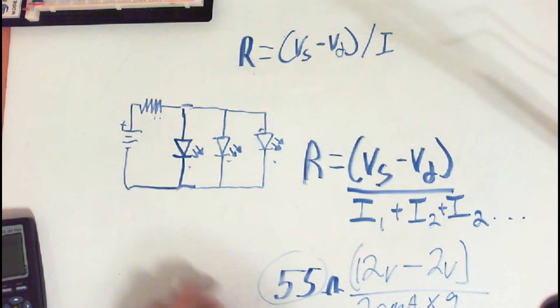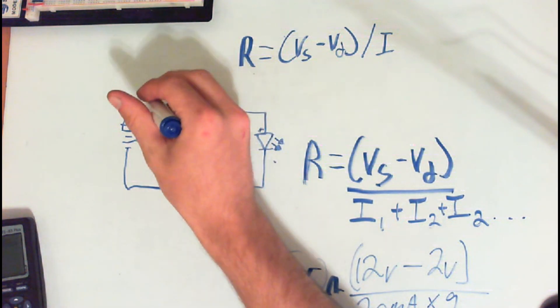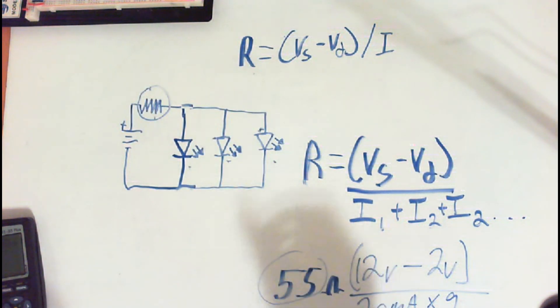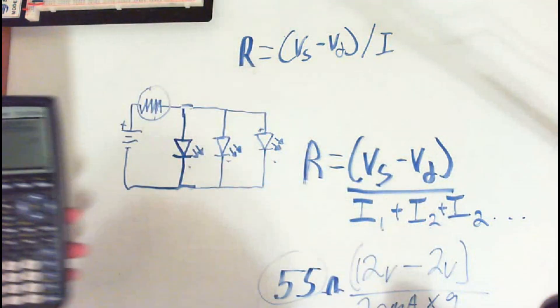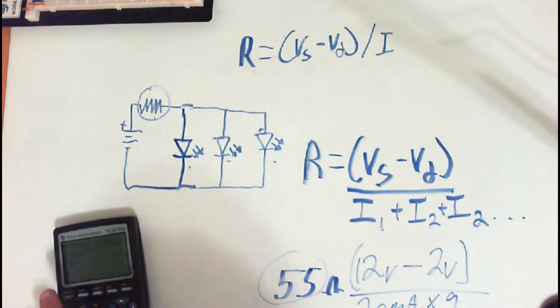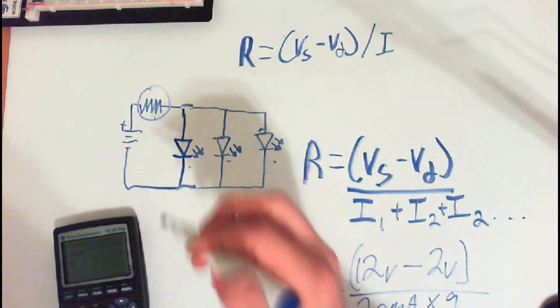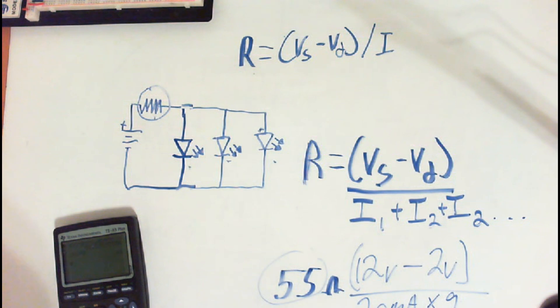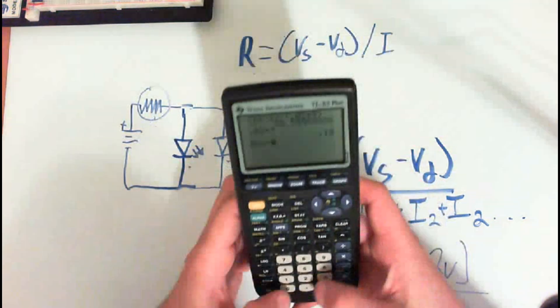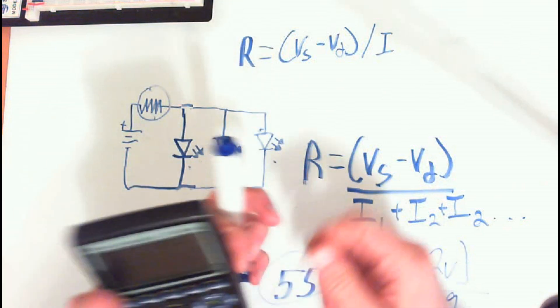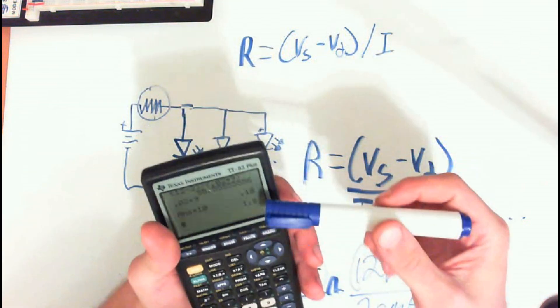So for my resistor right here, I would need a 55 ohm resistor. But now remember, it's going to be sourcing 0.02 times 9, 180 milliamps, which is a lot of power. And you know it's going to be dropping 10 volts. So let's figure out the wattage for that resistor. So it would be 0.18 times 10. So we would need a 1.8 watt resistor.